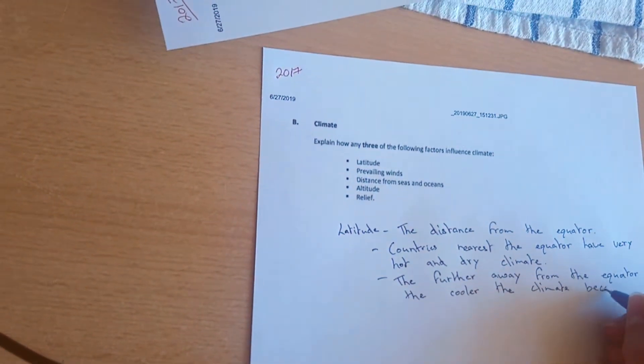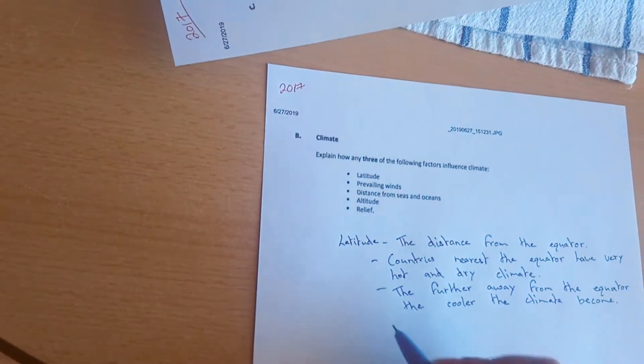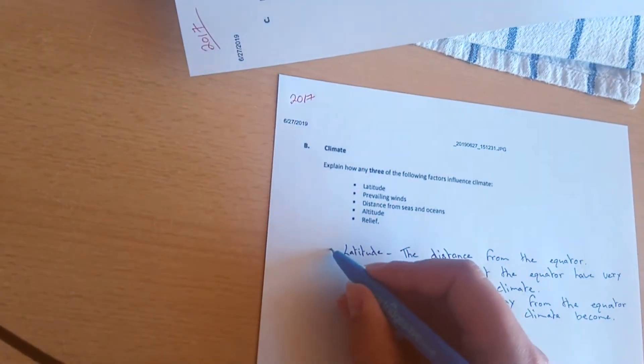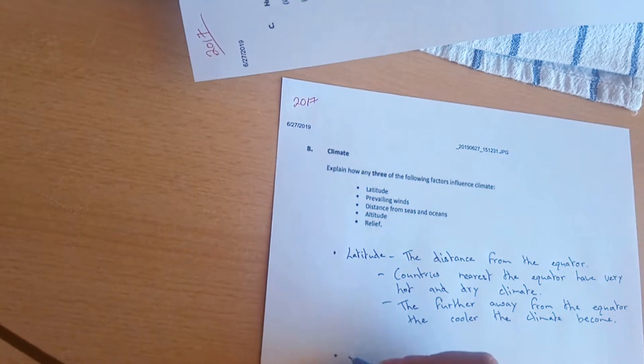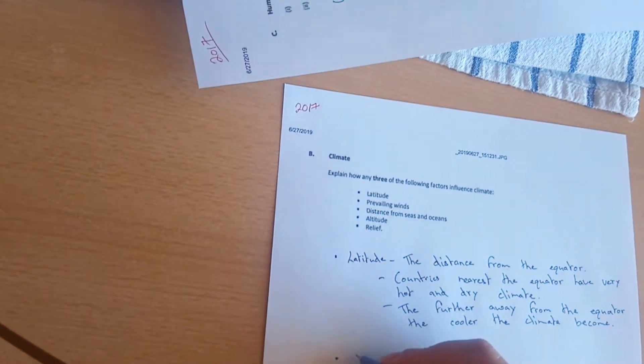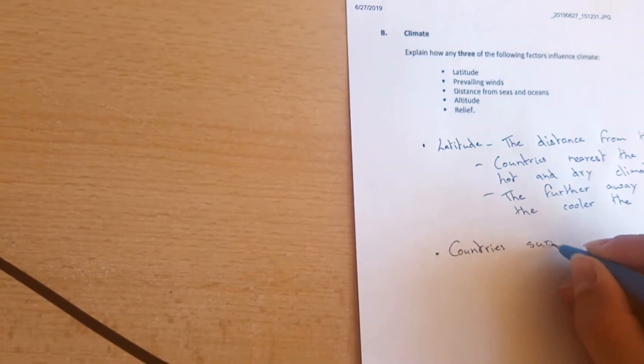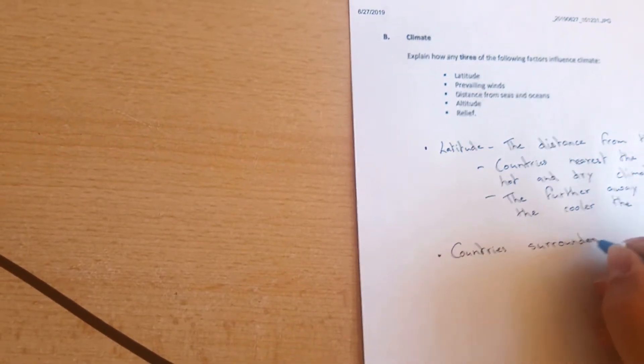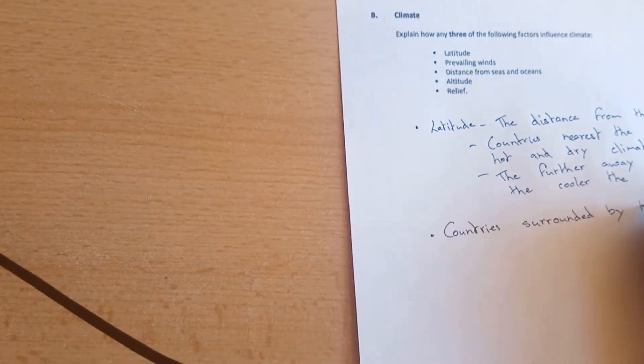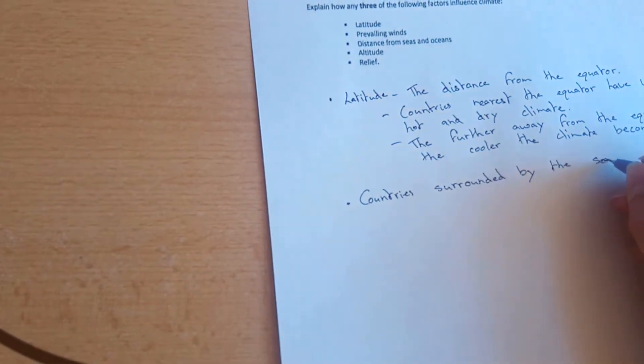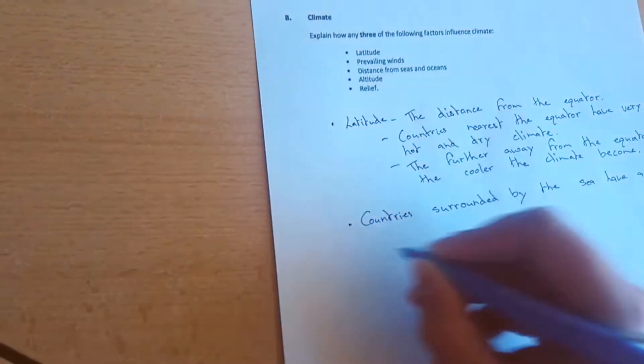Next we're going to take distance from seas and oceans. Countries surrounded by the sea, such as Ireland, have a temperate climate.